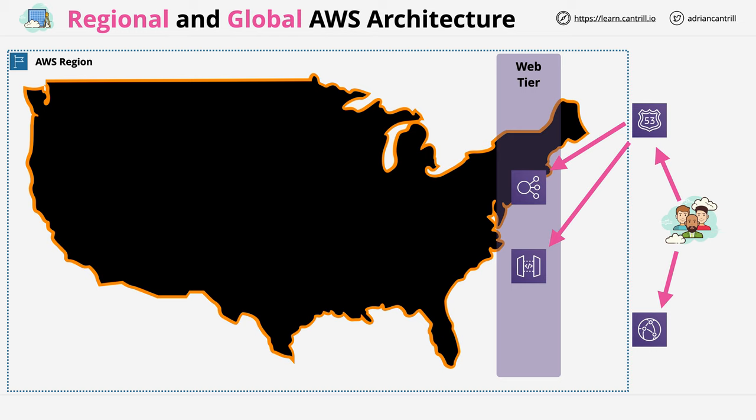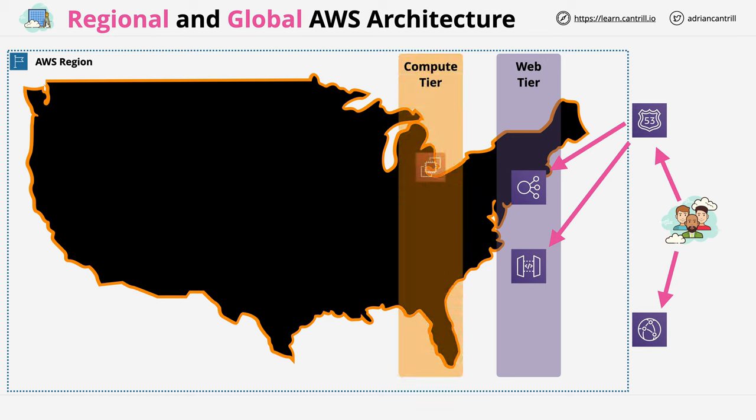The functionality provided to the customer via the web tier is provided by the compute tier, using services such as EC2, Lambda, or containers which use the Elastic Container Service. In this example, the load balancer will use EC2 to provide compute services through to customers. We'll talk throughout the course about the various different types of compute services which you can and should use for a given situation.